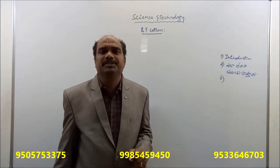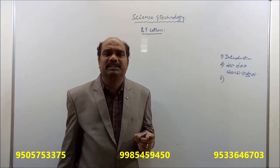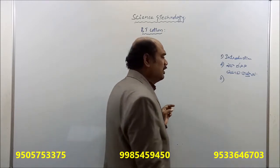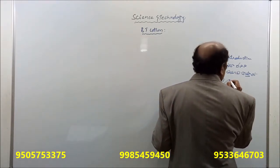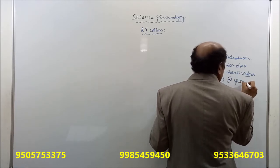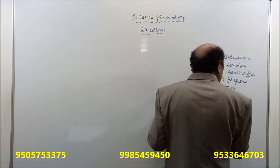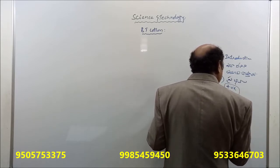Number 3 covers Bt brinjal and Bacillus thuringiensis general information, effects, positives and negatives. Number 4 is the conclusion.